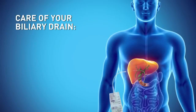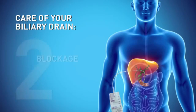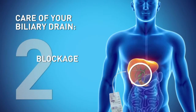There are a few things you'll need to look out for. Occasionally, fluid can leak out around the tube — this is generally not serious and can be addressed with gauze or dressing. Occasionally, the external drainage tube becomes blocked and flow to the bile bag stops. This may result in internal pressure or pain near the liver. You must consult your doctor immediately.